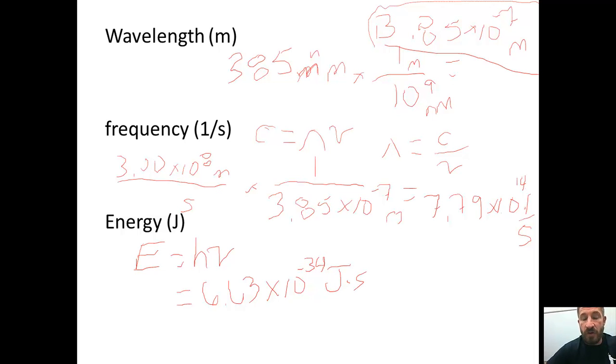Then we're going to multiply this by the answer we just found, which is 7.79 times 10 to the 14th, 1 over seconds. So multiply this by 7.79 times 10 to the 14th, 1 over seconds.